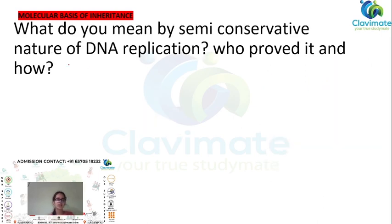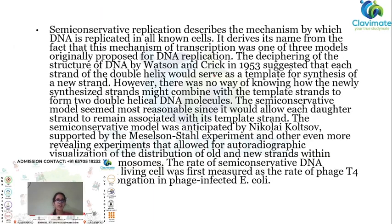What is the semi-conservative nature of DNA replication? Who proved it and how? Semi-conservative replication describes the mechanism by which DNA is replicated in all cells. The name comes from the fact that this was one of three models traditionally proposed for DNA replication. One such model suggested that each strand of the double helix would serve as a template for the synthesis of a new strand. However, there was no way of knowing how the newly synthesized strands might combine with the template strands.